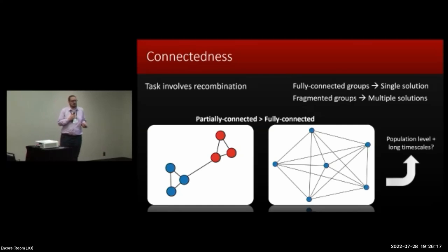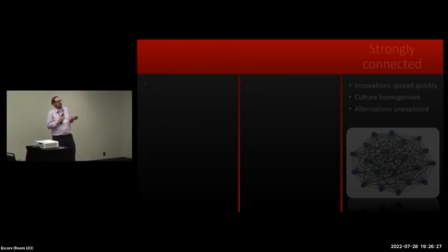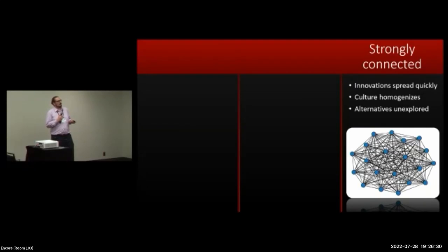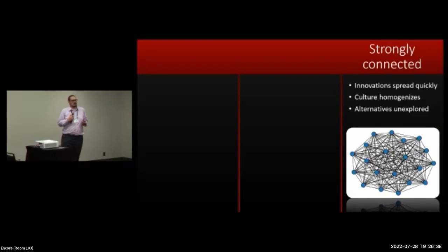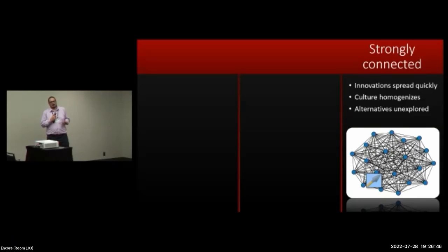So the question is: if we take this individual or group-level phenomenon, does it scale to the population level over long time scales? Previous models have shown that if a population is strongly connected, innovations spread quickly and culture homogenizes. The consequence is that behavioral alternatives or cultural traits tend to go unexplored. For example, imagine this network is a population learning how to fish — one individual discovers the fishing spear, it quickly spreads through the population, and this discourages the population from inventing any alternative ways of solving the problem.